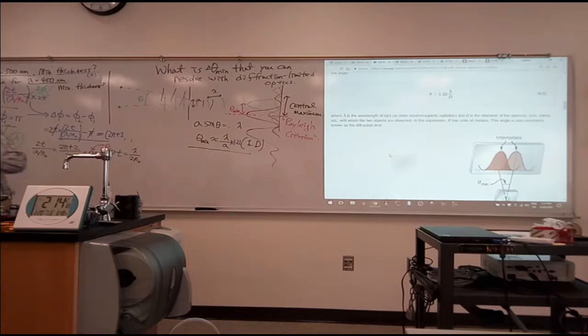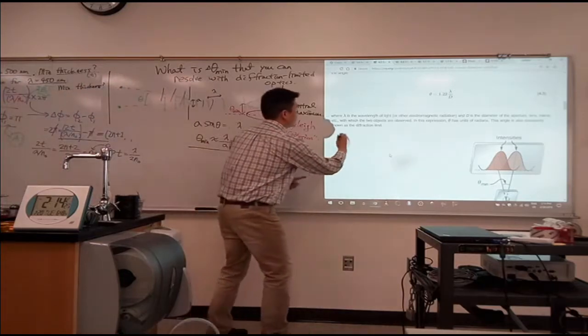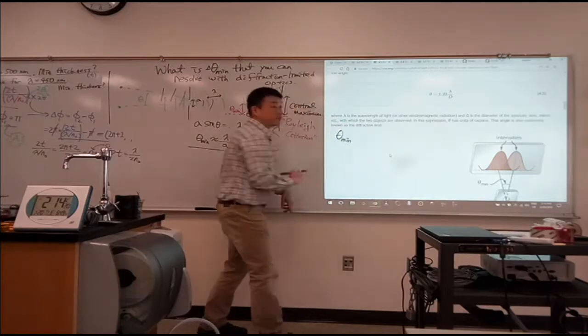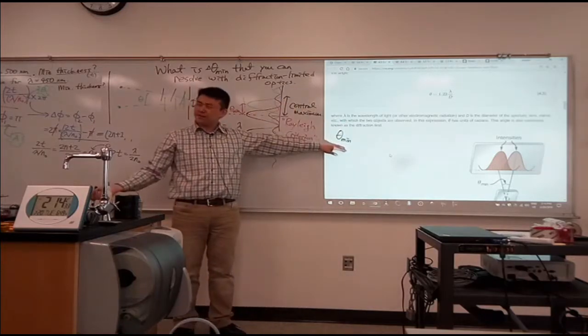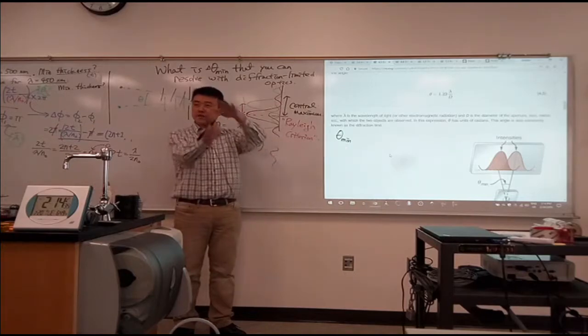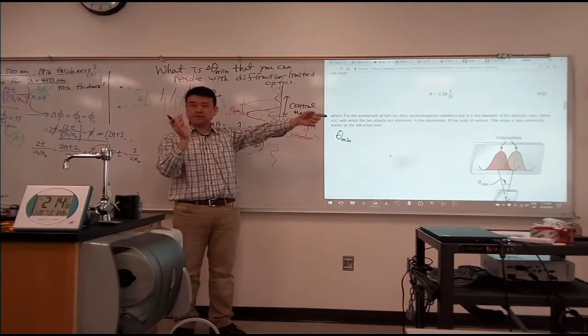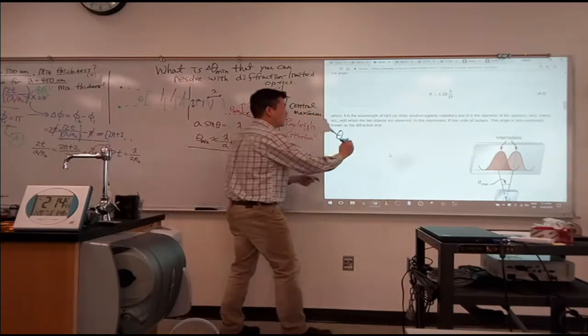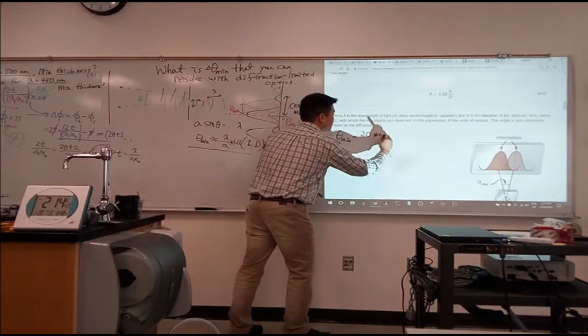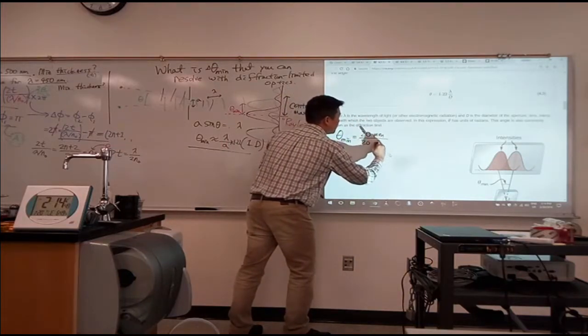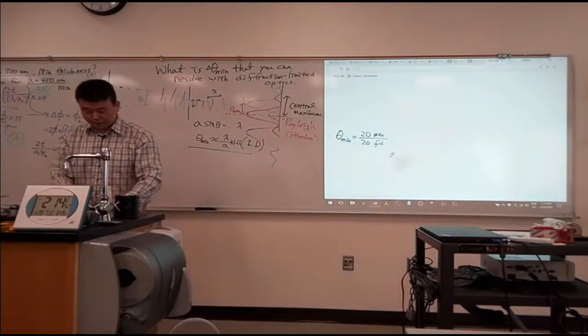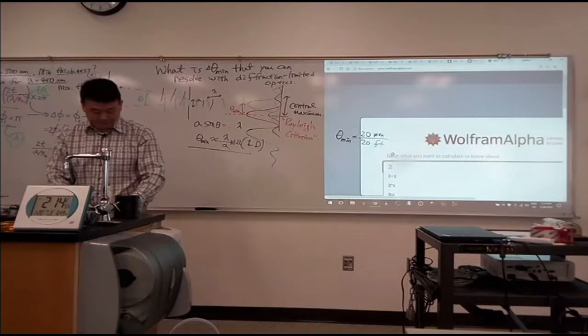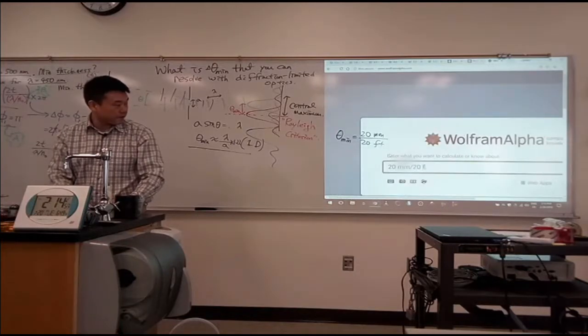So let's say for your eye, let's say you are dealing with someone who has 20-20 vision. So this is their theta min, their resolution minimum. And am I remembering my numbers correctly? 20 millimeter separation over 20 feet distance, is that the actual meaning? Okay, so theta min, if I'm remembering that correctly, it should be 20 millimeters over 20 feet. And I don't want to do the unit conversion, so let me use Wolfram Alpha.